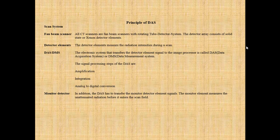Principle of the DAS scan system: all CT scanners are fan beam scanners with a rotating tube-detector system. The detector array consists of solid state or xenon detector elements that measure radiation intensities. During a scan, the DAS or DMS is the electronic system that transfers the detector element signals to the image processor. Signal processing steps of the DAS include amplification, integration, analog-to-digital conversion, and the monitor detector.